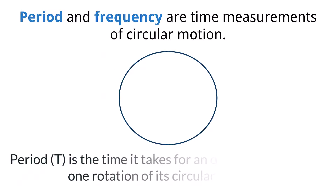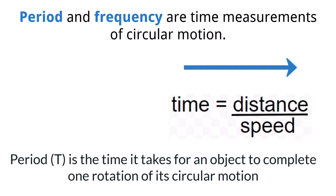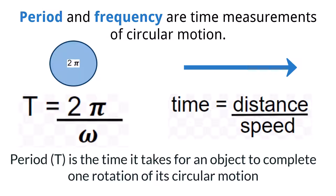When considering circular motion, the measurement of time is also redefined. Period, also known as periodic time, is the time it takes for an object to complete one circle of its motion, and it is represented by the capital letter T. Because the object is traveling in a circle, we can define the distance traveled as the angular displacement of the whole circle, which is 2 times pi, since the angular measurement in radians of a full circle is 2 pi. Much like our understanding from kinematics, if you know the distance traveled and the speed at which you travel, you can define the time as distance divided by speed. Here, the period is defined by the angular displacement of the full circle divided by the angular speed omega.